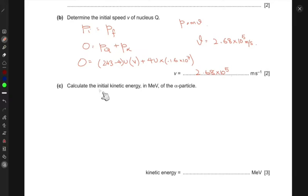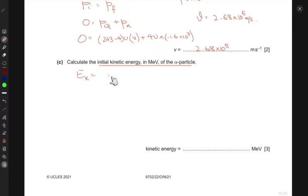Part (c): Calculate the initial kinetic energy in MeV of the alpha particle. That's straightforward. The kinetic energy is given as half MV squared.